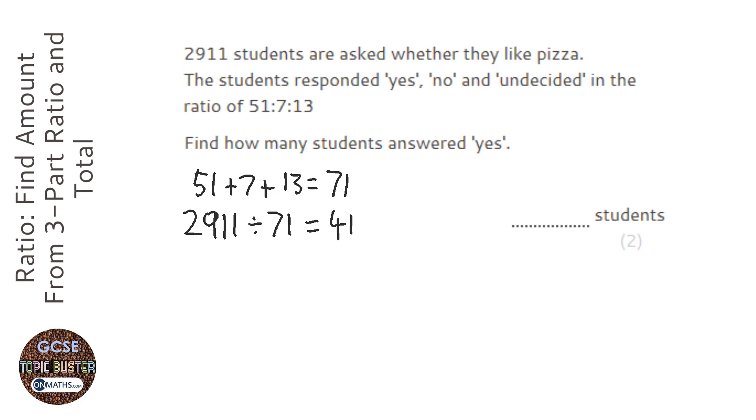Now we need to know that the first one is the yes, the second one is the no, and the third one is the undecided.